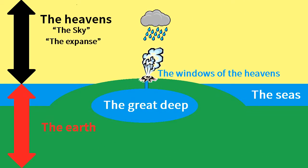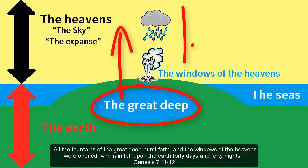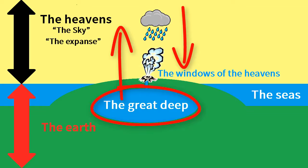Genesis chapter 1 sets the stage for the events of Genesis chapter 7, verse 11: 'All the fountains of the great deep burst forth, and the windows of the heavens were opened, and rain fell upon the earth forty days and forty nights.' The parallelism of fountains of the great deep bursting forth with windows of the heavens opened depicts not holes in a solid dome letting rain fall downwards, but cracks in the earth letting water burst upwards before falling back to earth.